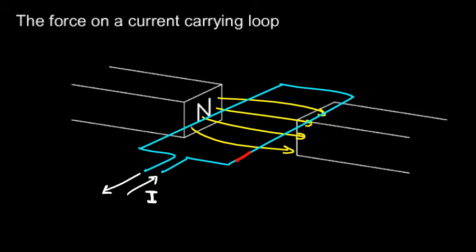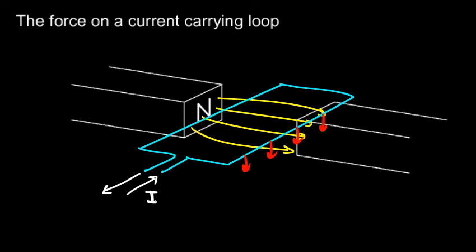While the current is going down one side of the wire, it's moving across the magnetic field in one direction, and while it's moving down the other side it's moving across the field in the opposite direction. So it experiences force in opposite directions: a downward force on one side and an upward force on the other. You can see that this would tend to cause the loop to twist and rotate — that produces a turning force, what we call a torque.